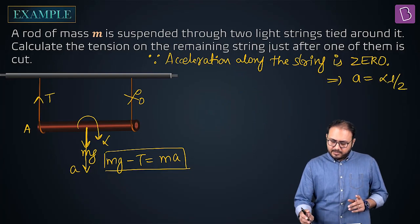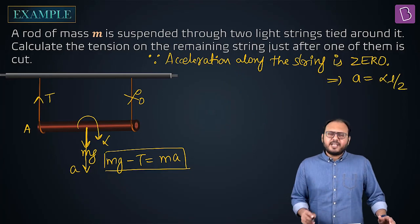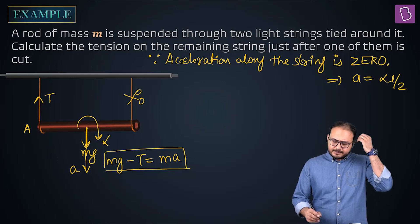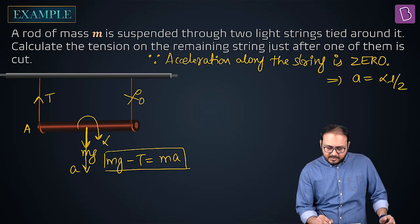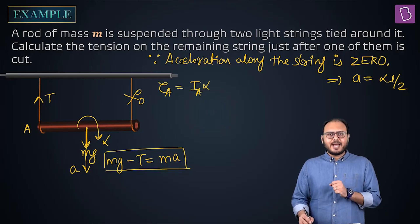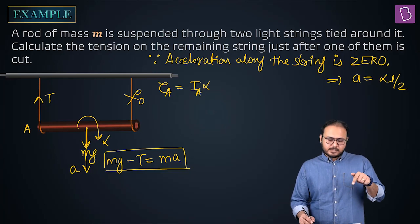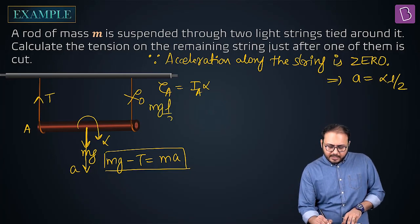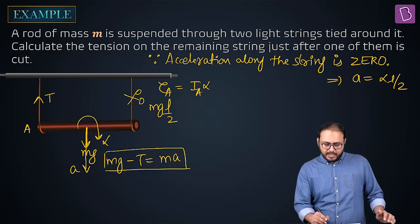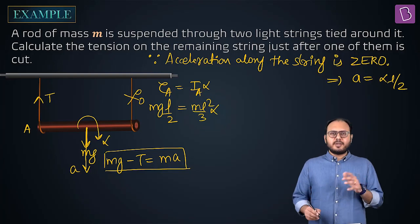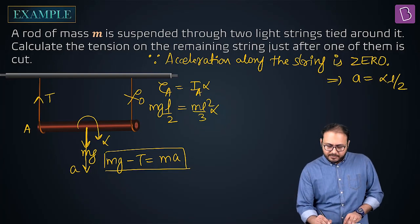So Mg minus T equal to MA. Good. Now take the torque equation. About what point? About A point or center? Let's see, let me take about A point. Take torque I alpha. About A, torque will be Mg L by 2. And the inertia is ml square by 3 alpha.